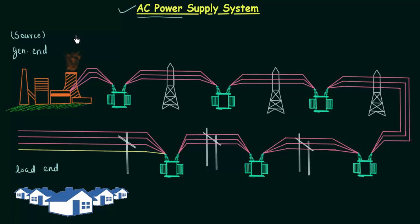The first question that comes to mind is: why do we need to transmit AC power over a long distance? Why can't we construct the power station near the load? This used to happen in the early days. We had two options: construct the power station near the load where electricity is demanded, or construct it near the raw material. The raw material for a thermal power plant is coal, and it is not always the case that loads are near the coal mine.